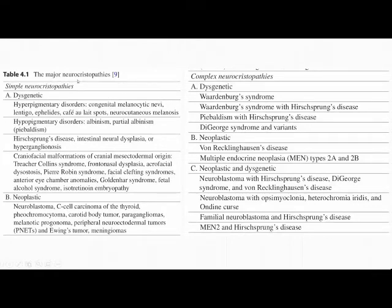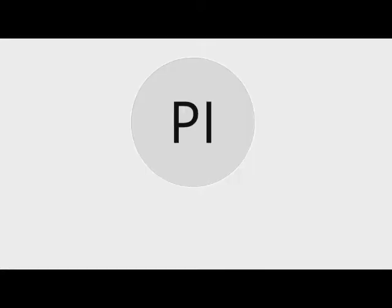Major neurochristopathies include dysgenetic forms such as hyperpigmentary and hypopigmentary disorders, piebaldism, Hirschsprung disease, intestinal neuronal dysplasia, and syndromic facial malformations of mesoectodermal origin. Neoplastic forms include neuroblastoma, pheochromocytoma, medullary carcinoma of the thyroid, and paragangliomas. Complex forms include Waardenburg syndrome, DiGeorge syndrome, Recklinghausen's disease, and MEN 2a and 2b syndromes.